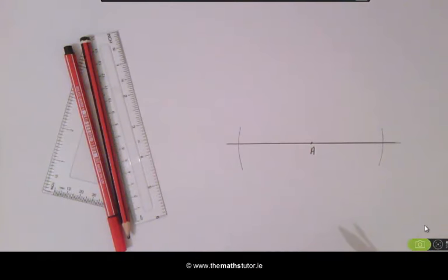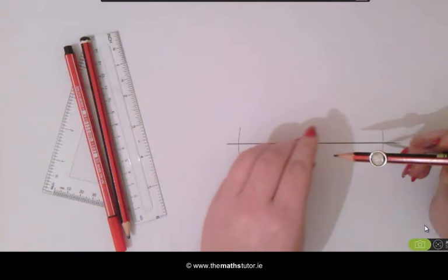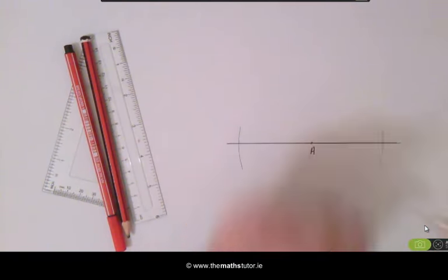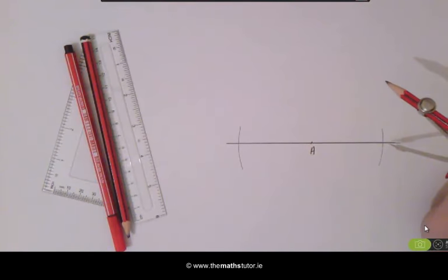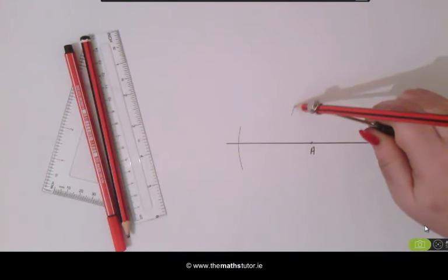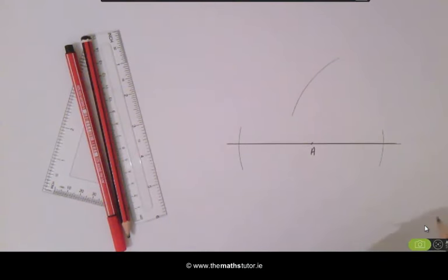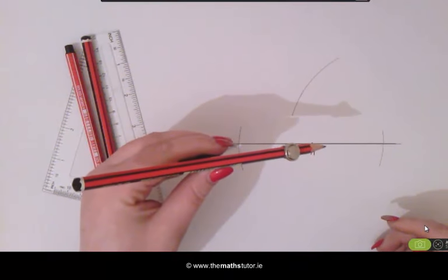We now need to make sure that the compass width is more than the width from the arc to the point A. We then place our compass on our new arc and draw an arc above the line, and without changing the width we do the same on the other side.